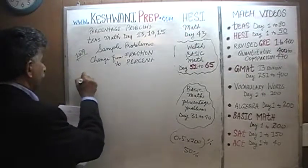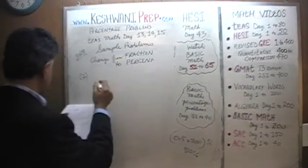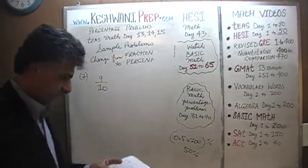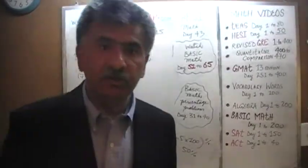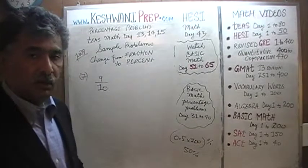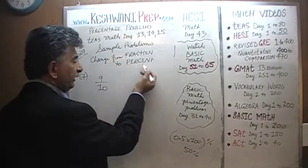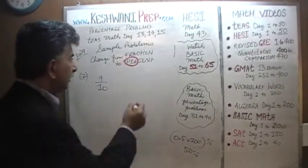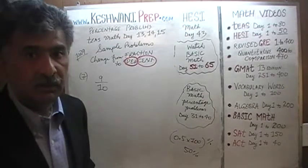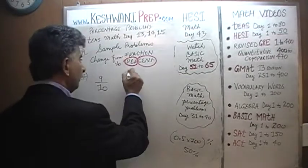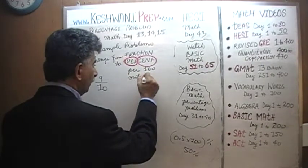Number seven. We're being asked to convert the fraction into a percentage. The first one is nine-tenths. Before we worry about how to convert that fraction into a percentage, let's first understand what the word 'percent' actually means. The word percent literally means per one hundred — or, if you like, out of one hundred.